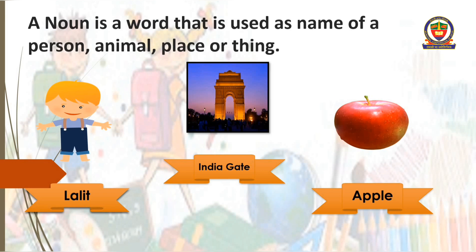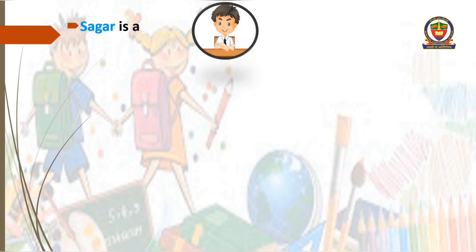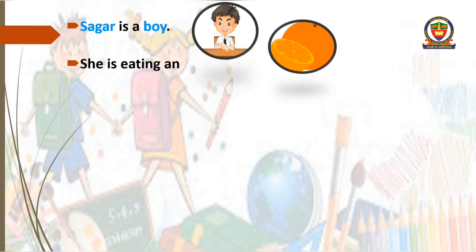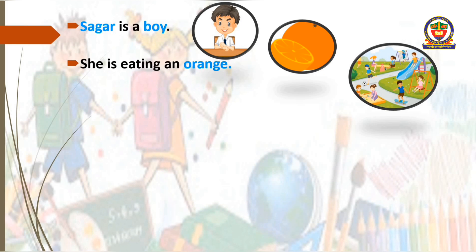So let's now see some examples of noun and how they are used in sentences. In front of us, there is a picture of a boy. His name is Sagar. So how we will use that in a sentence: Sagar is a boy. In this sentence, we have two nouns — Sagar and boy. Next, we are seeing a picture of orange. So the sentence will be: she is eating an orange. Next, we are seeing a picture of park and the sentence would be: Madhu is playing in the park. This sentence has two nouns — Madhu and Park.